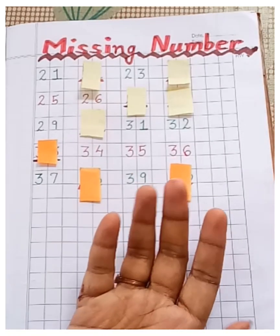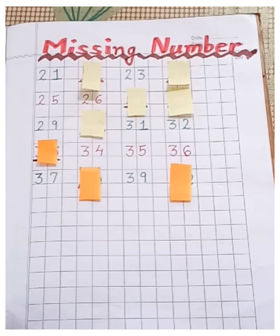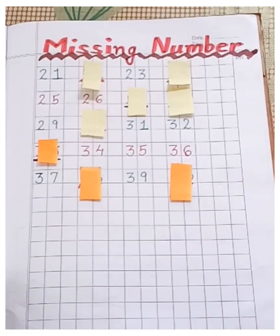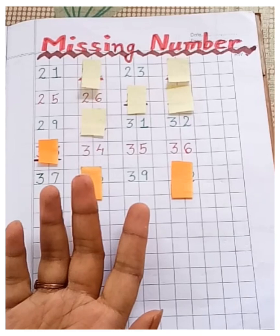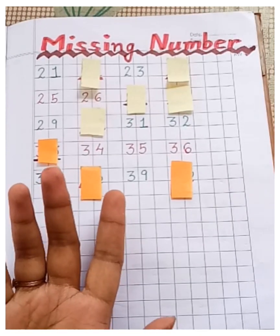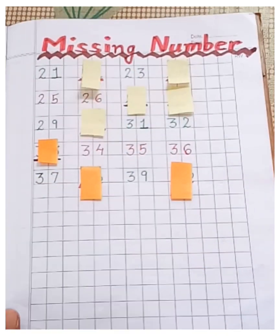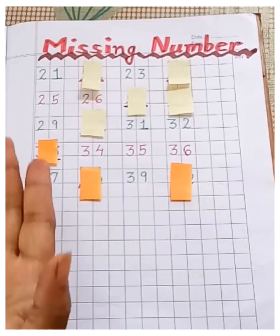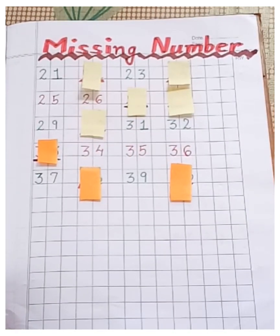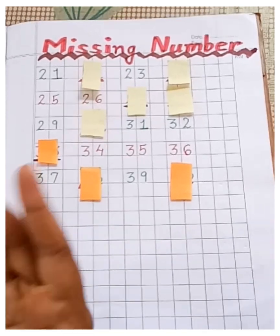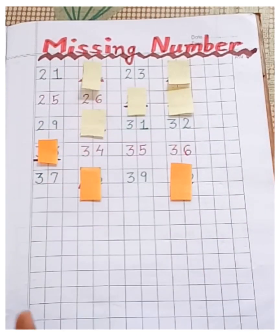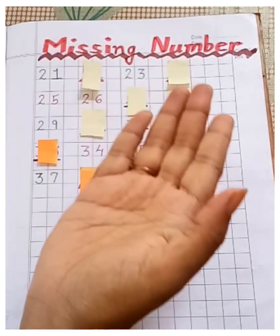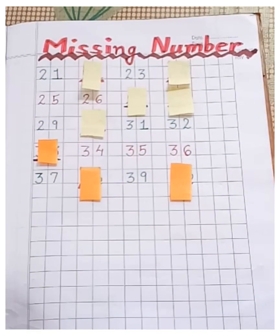Today we are going to find out missing numbers 21 to 40. Children, will you help me finding out the missing numbers? Can you see the numbers are complete? No, few numbers are missing. So let's find out which numbers are missing.